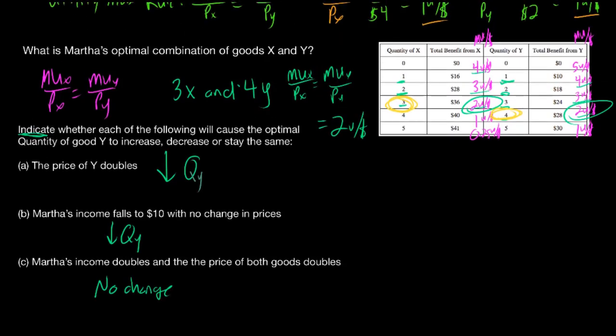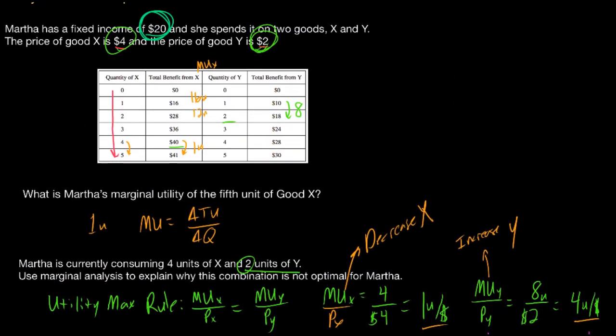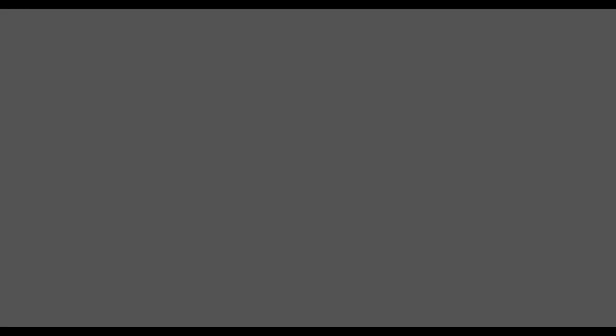In this video, we walked through the solution to a real free response question on utility maximization. We revisited the utility maximization rule and applied it to answer different questions about how a consumer responds to changes in prices, changes in income, and other variables based on data in a total utility — or in this case, total benefit — table.